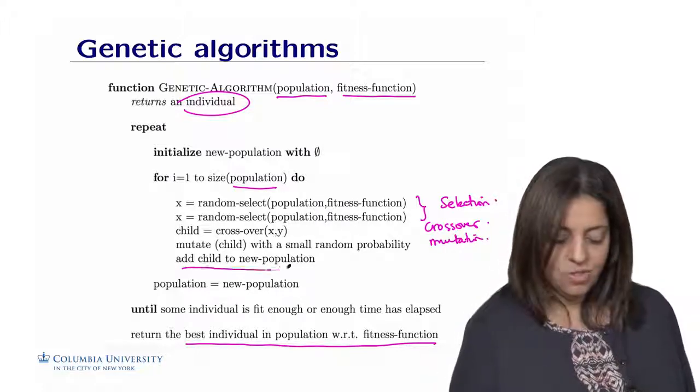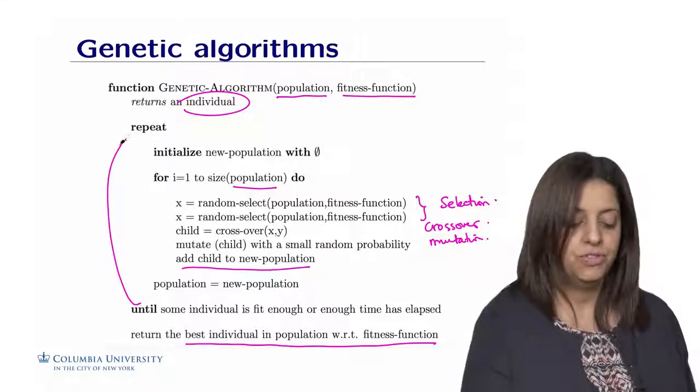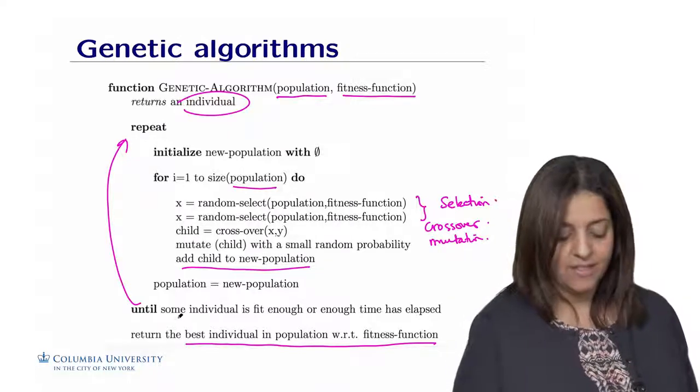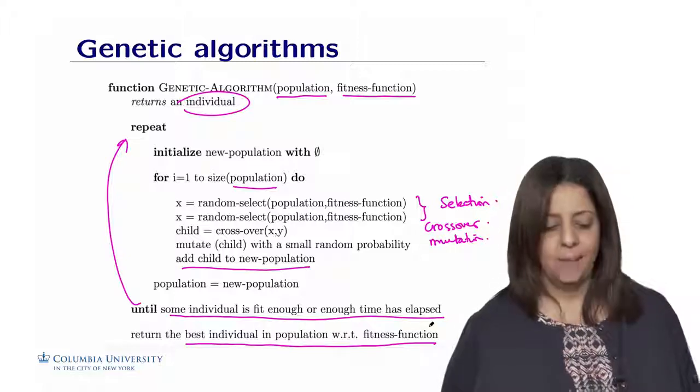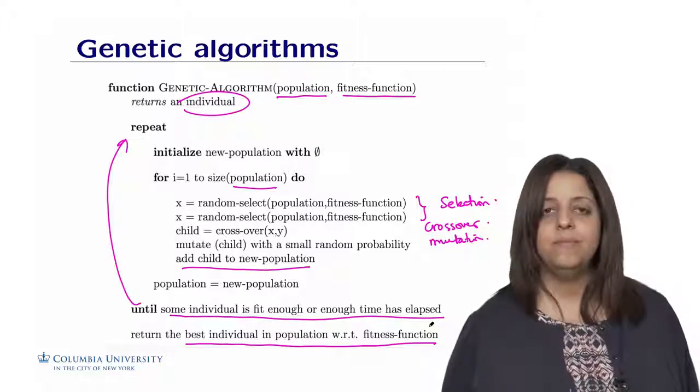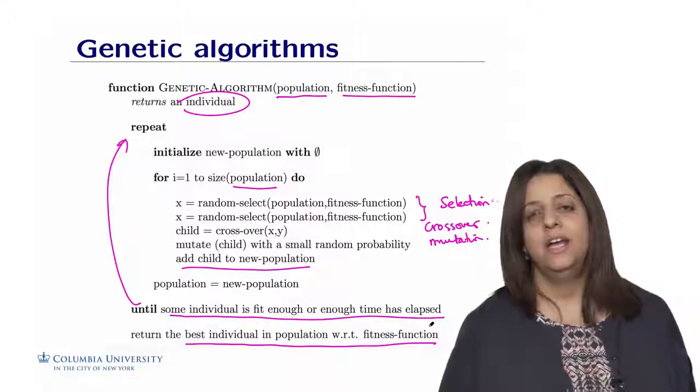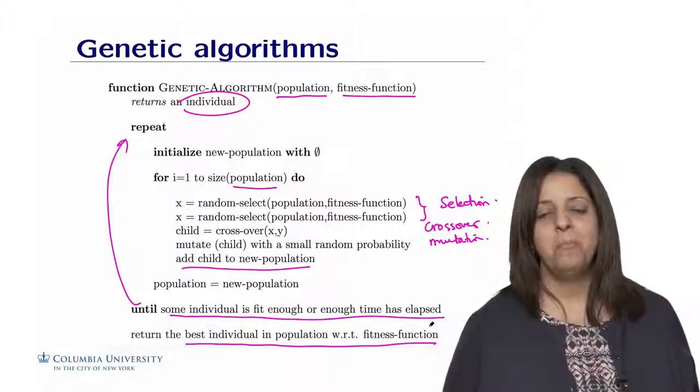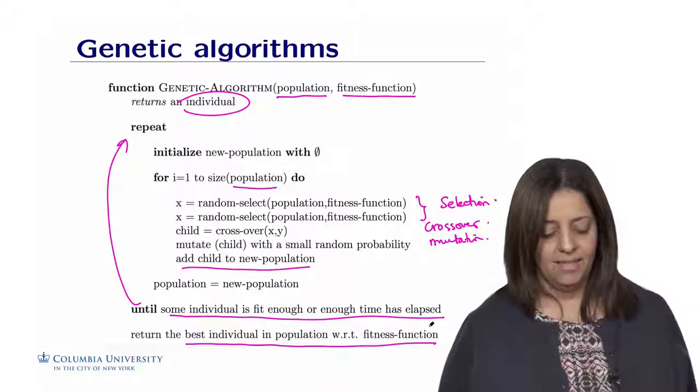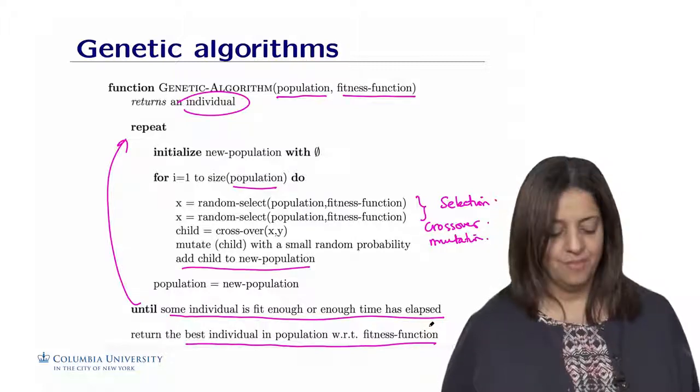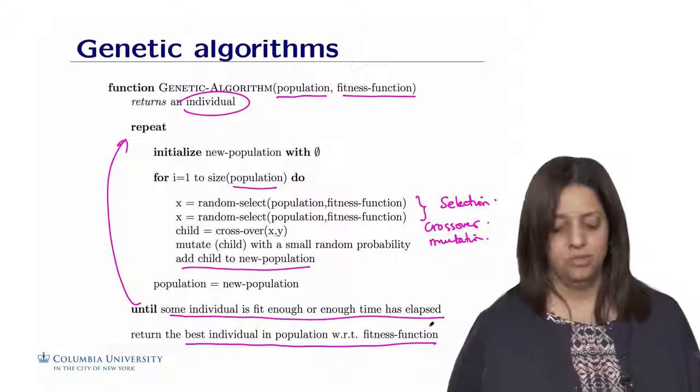And we start the process over until either we have some good individuals in the population that are fit enough, or the time has elapsed. So the process is just starting from this population, create a new population by crossing over the old population mutation, and then keep doing it until the population has some more variability, and with a good chance to have some individuals that are fit enough to be represented as a solution.